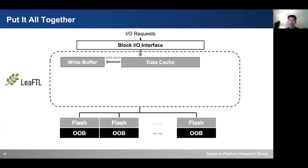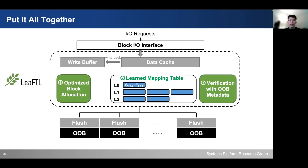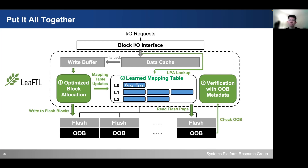To put it all together, LiFTL consists of multiple components: the optimized block allocation, the learned mapping table, and the OOB verification mechanism. To handle write requests, the optimized flash block allocation sorts the flash pages by LPA and updates the mapping table entries in the learned mapping table, then the flash pages are written to the corresponding flash blocks. During address translation, the learned mapping table predicts the corresponding physical page for the logical address, the predicted flash page is loaded to the DRAM buffer, and the OOB verification mechanism is applied. If a misprediction happens, we can correct it with minimized flash penalty.